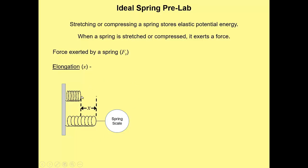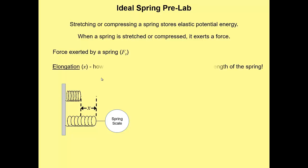Put your ruler on the right edge of the spring and when you stretch it out, read on the ruler how much it stretched. The ruler is a centimeter ruler, so I need you to convert to meters, because newtons are also in meters — kilogram meter per second squared — so I want elongation in meters as well. Make sure when measuring elongation, you're only measuring how much it stretches, not the overall length of the spring.